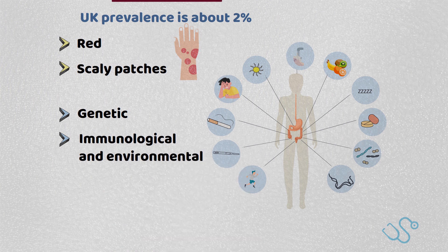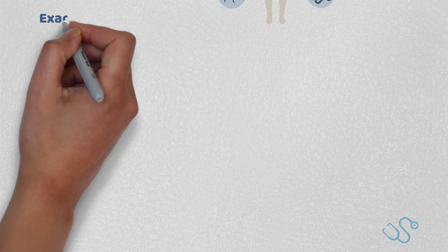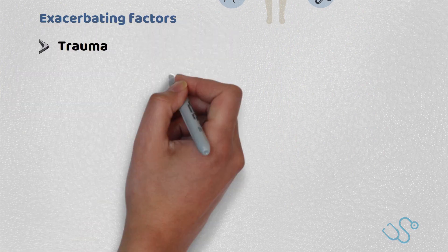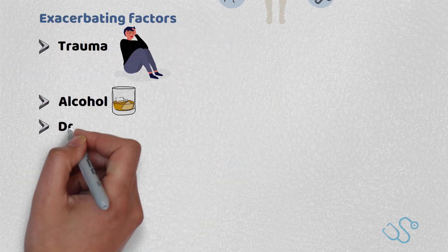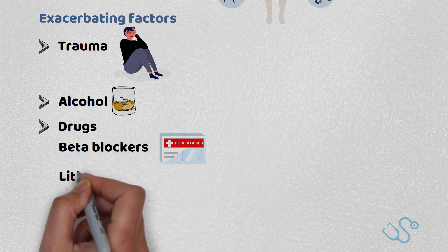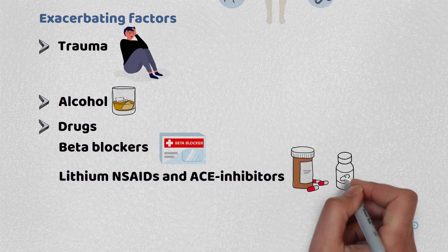Notably, it's recognized that stress or trauma worsens the condition, whereas there are factors that improve it like sunlight. When it comes to exacerbating factors, we know that trauma, alcohol, as well as drugs such as beta blockers, lithium, NSAIDs, and ACE inhibitors worsen psoriatic features.